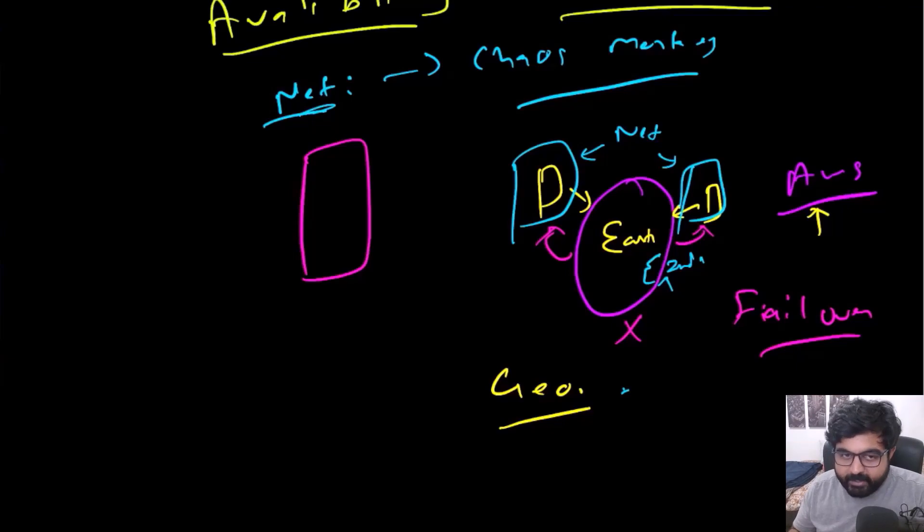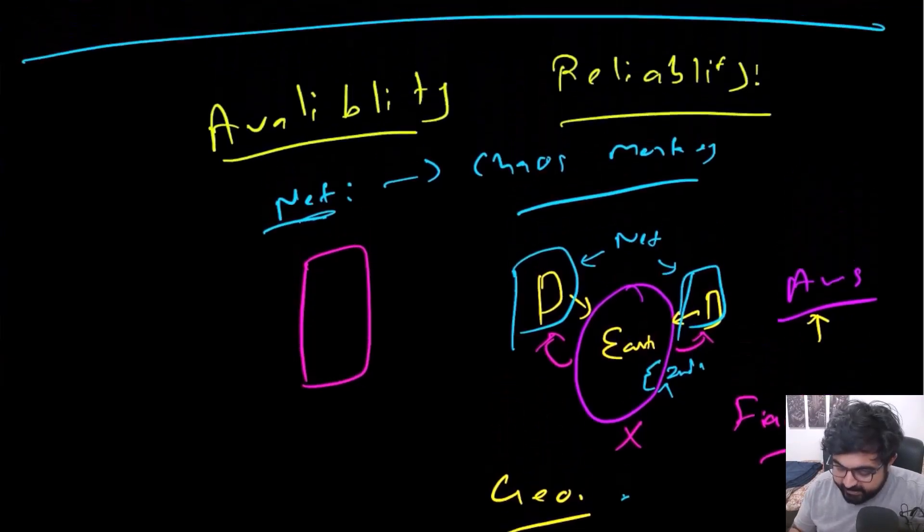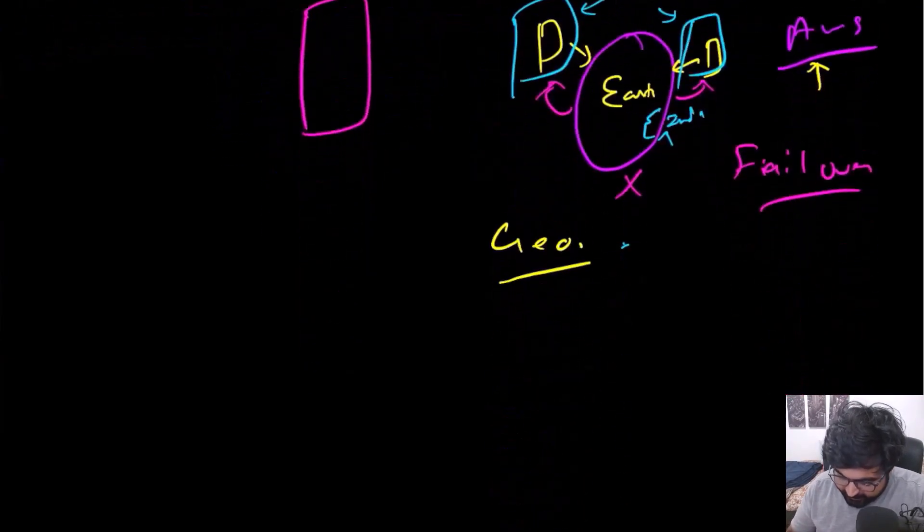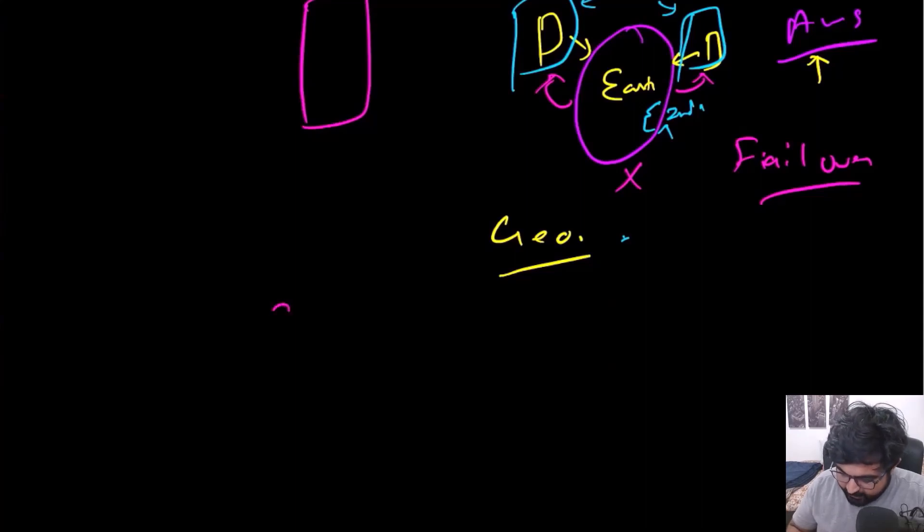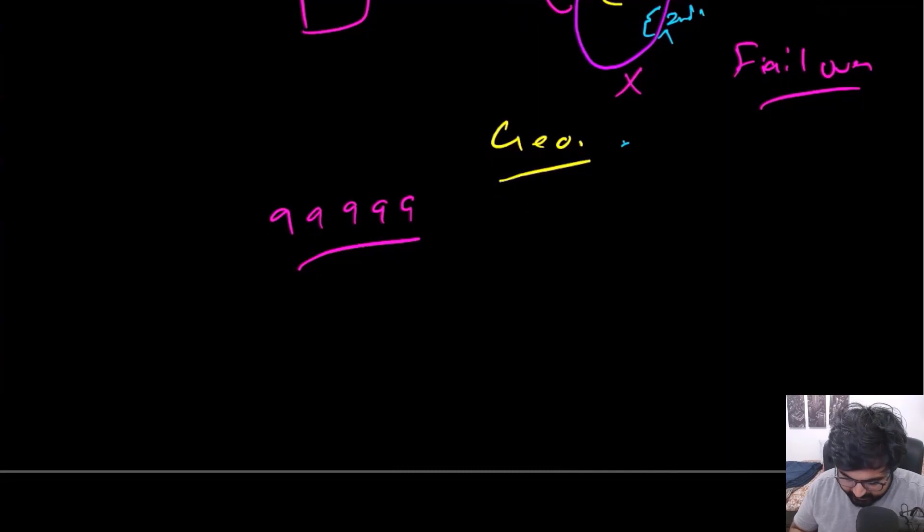So you get my point that what availability and reliability means. Now typically in order to measure availability and reliability, there are these nines that are being used. So what these nines being mean is that let's say this one is 99.999, this is typically referred to as five nines as well.